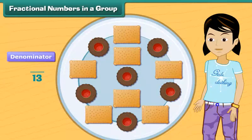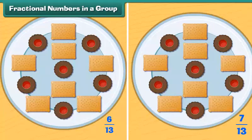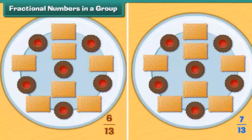But the biscuits are not the same type. Six of them are chocolate biscuits, whereas seven of them are milk cream biscuits. So those are our numerators. Therefore, we can say that six thirteenths are chocolate biscuits and seven thirteenths are milk cream biscuits.